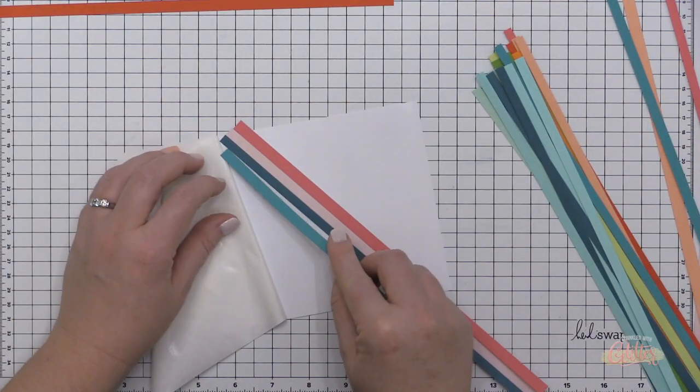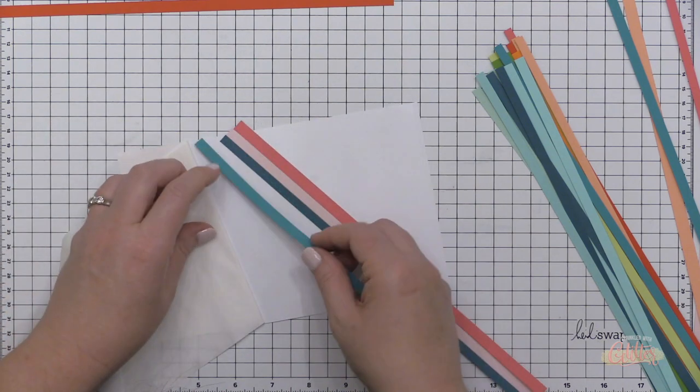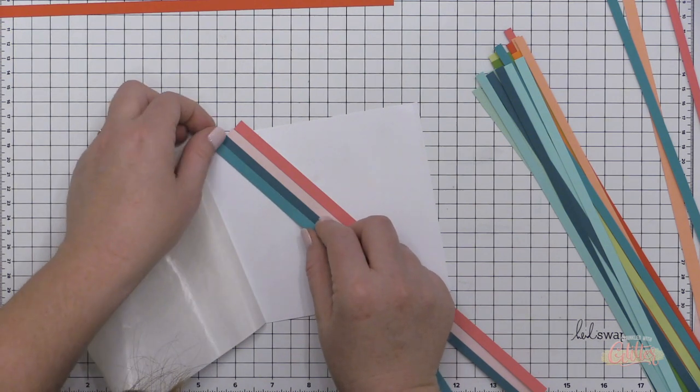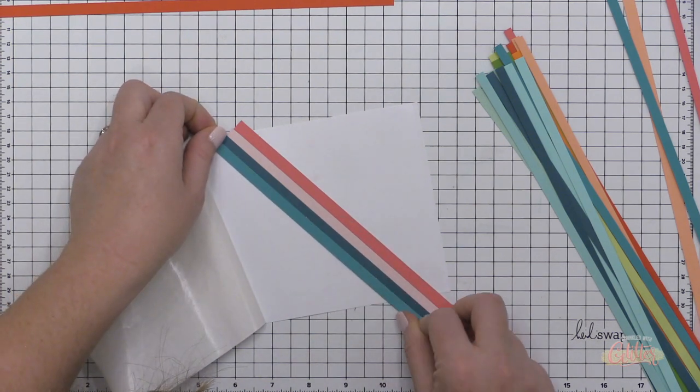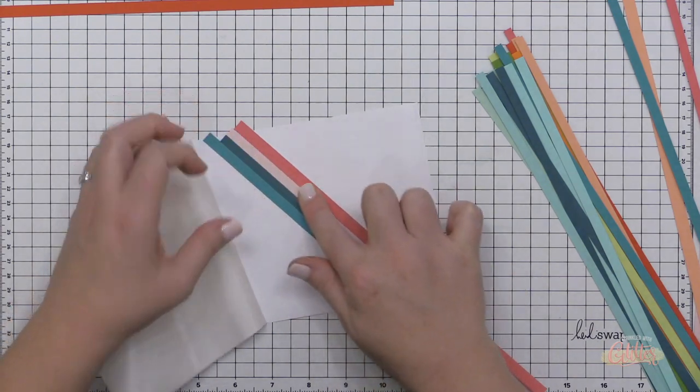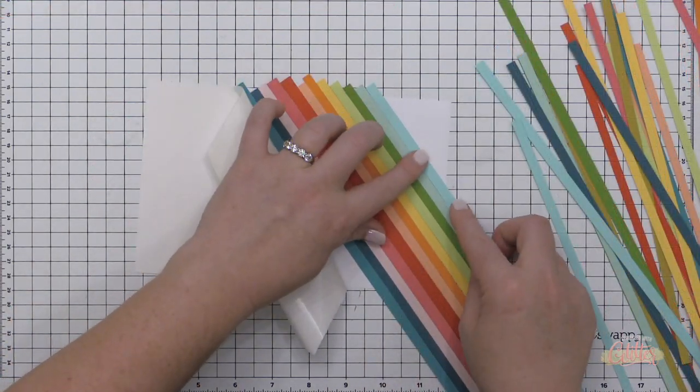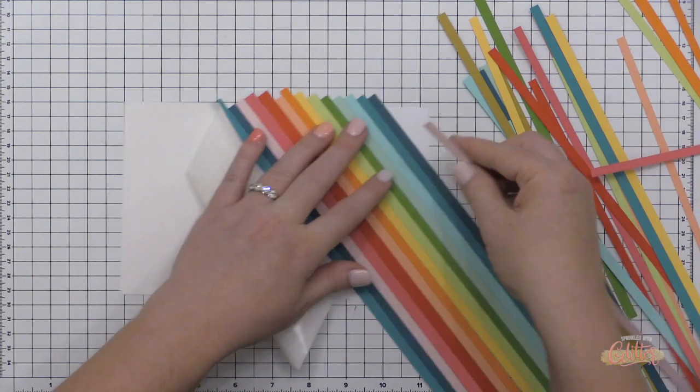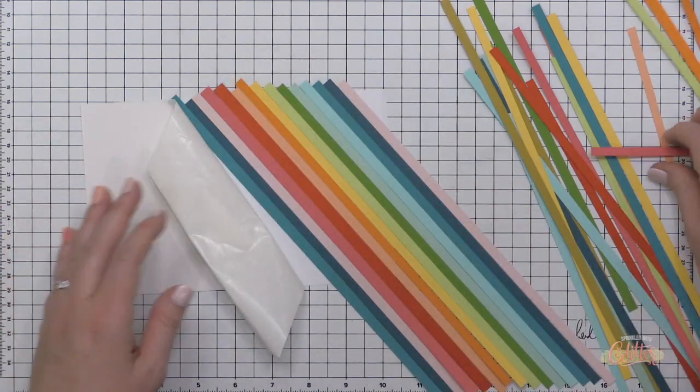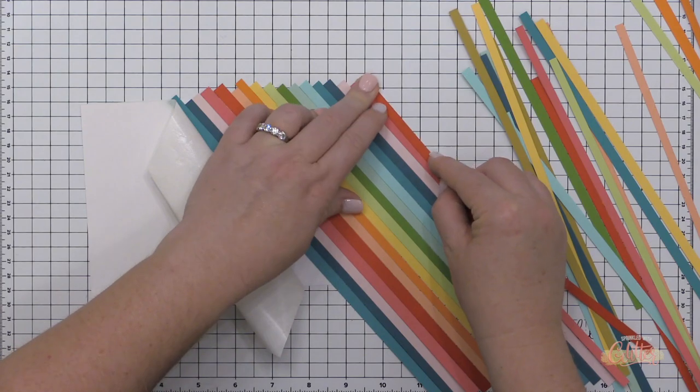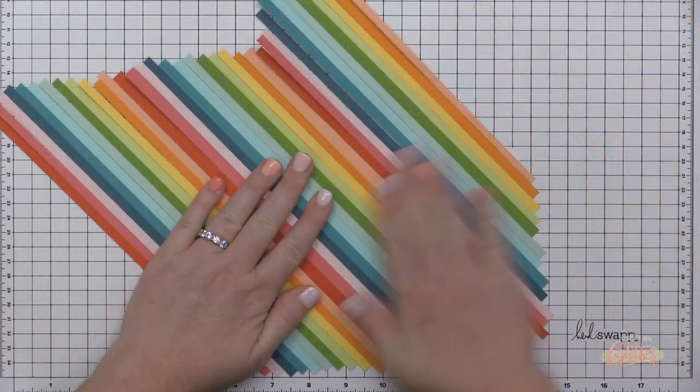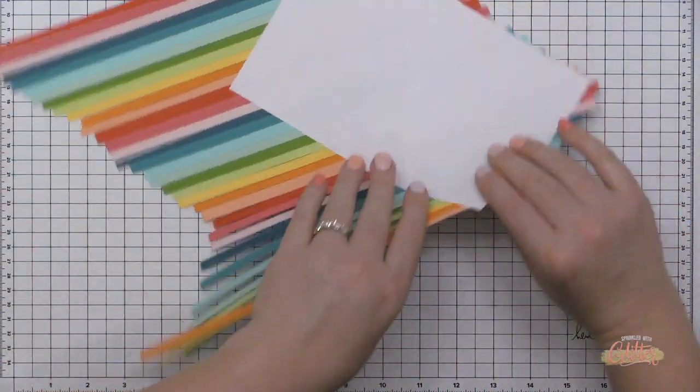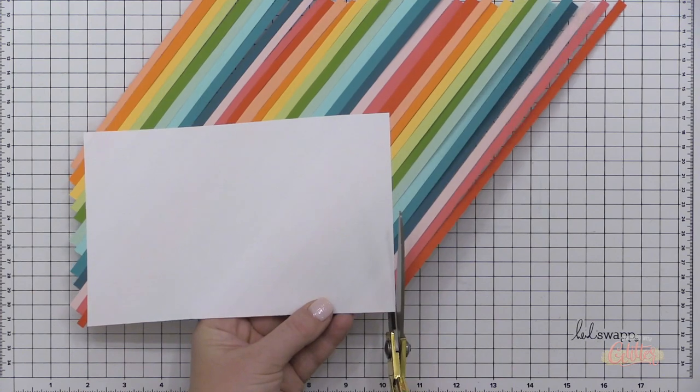I'm allowing the strips to hang off of this piece of sticky paper that I've created, but I'm leaving all of the long ends on one side because I'm going to go through and trim those off later. Those long pieces can be used to create another piece like this. I cut about three strips of each color and I was able to cover this entire piece and I had strips left over, so you don't need a ton of cardstock. This is a great technique for scraps if you have them.